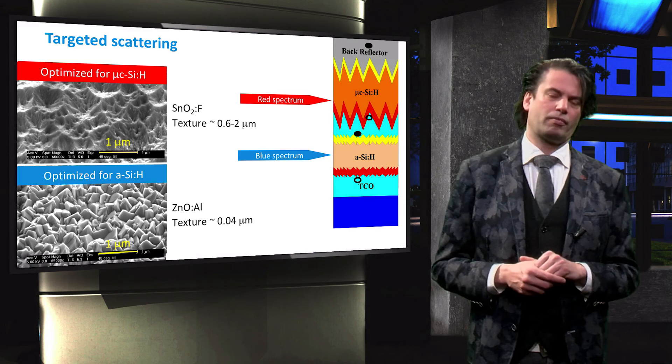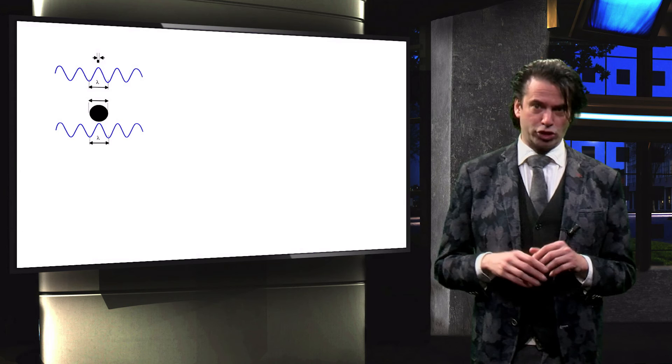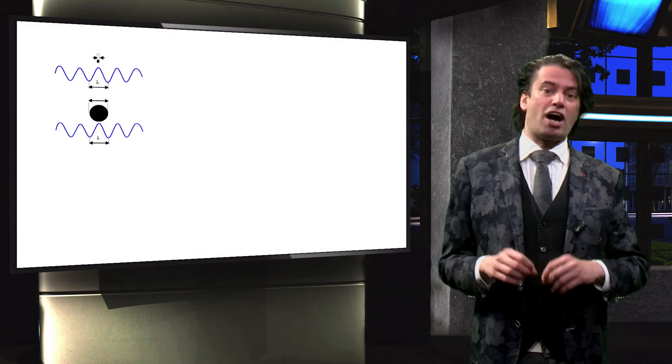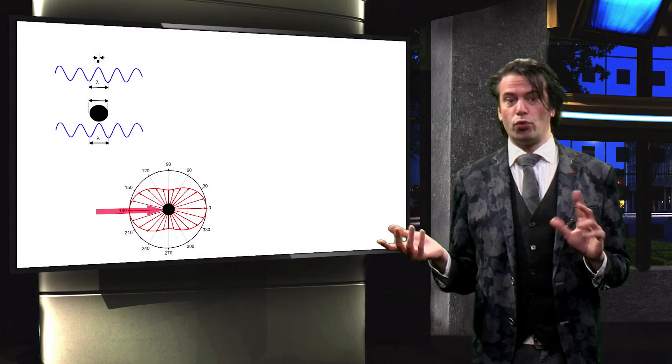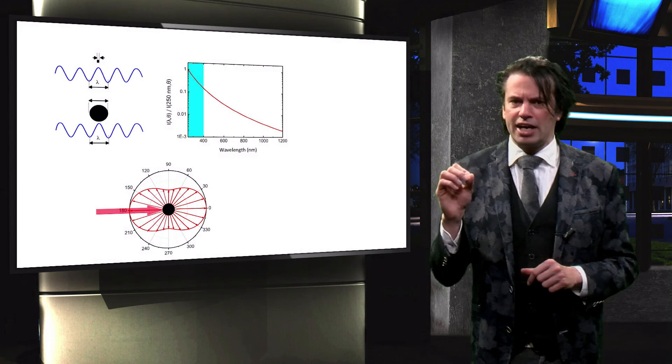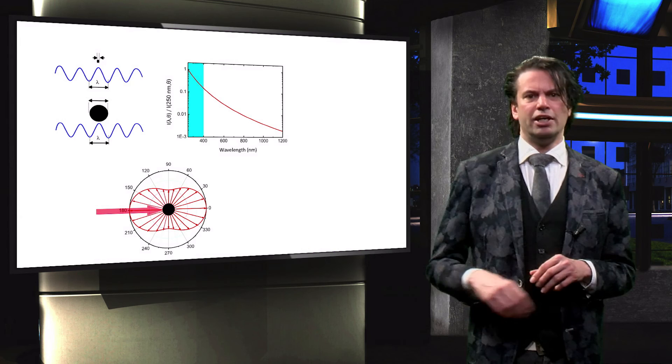So in summary, we saw how Rayleigh scattering occurs for particle sizes smaller than the photon wavelength. When the particles and the photon wavelengths are of roughly equal size, Mie scattering occurs. In the case of Rayleigh scattering, light is effectively scattered in all directions. And Rayleigh-sized particles are very effective at scattering small wavelength photons. This is why the skies appear blue.